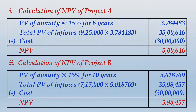The two NPVs clearly tell us that project B is beneficial when it comes to NPV. But notice that project B generates this NPV over a period of 10 years, whereas project A generates its NPV over just six years. That is why, before projects A and B can be compared, we must make them comparable.